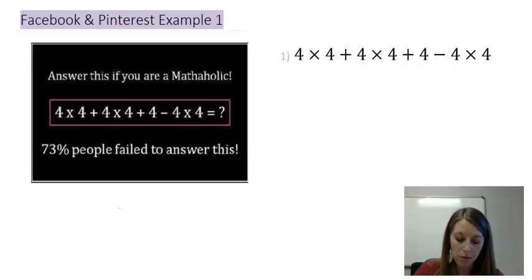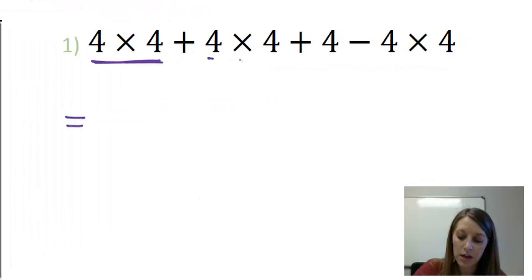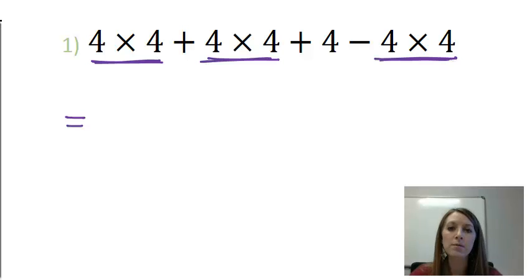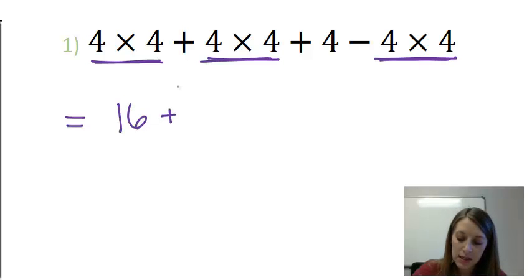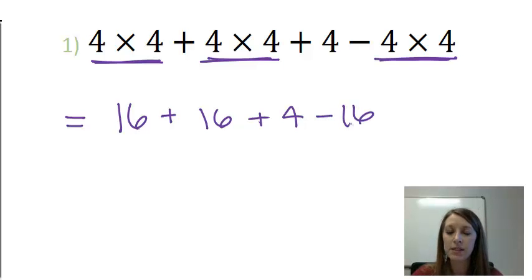So the correct answer to this problem is 20, and let me work through it very quickly to show you how to get that. There's no parentheses and there's no exponents here, so my first thing I'm going to focus on is multiplication. I see it three different times throughout this problem, and since they're all isolated, I can work them all at the same time. 4 times 4 gives me 16, so I'm going to put 16 in all those underlined places here. Again, ensuring I copy everything down from step to step so I don't lose anything.